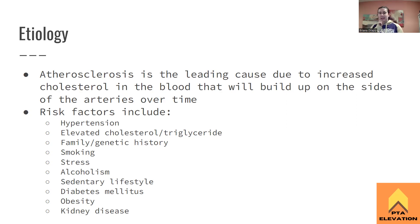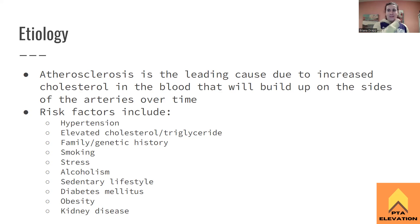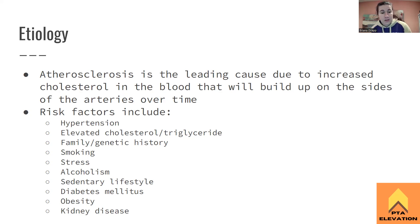Smoking is a major risk factor — it causes problems with emphysema, COPD, chronic bronchitis, and decreases oxygen while increasing risk of blood clots. Combined with birth control, it raises clot risk even further. High stress levels elevate catecholamines — epinephrine and norepinephrine — which raise blood pressure and increase cardiac demand. We want to keep stress levels down and avoid elevated cortisol.